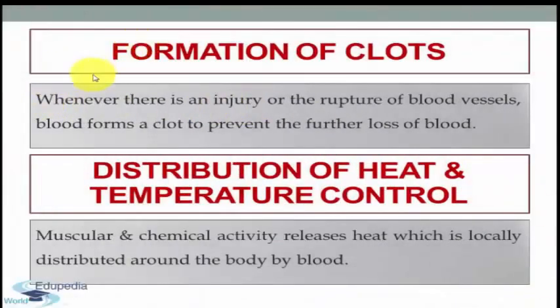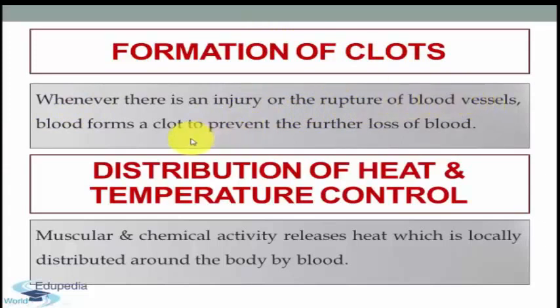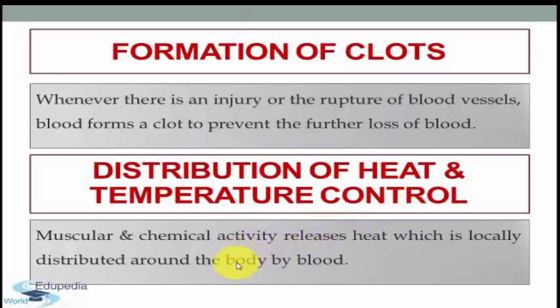The next function of blood is formation of clots. Whenever there is an injury or the rupture of blood vessels, blood forms a clot to prevent further loss of blood. The next function is distribution of heat and temperature control. Muscular and chemical activities release heat, which is distributed all around the body by the blood, and in this way an even temperature is maintained in all body regions.